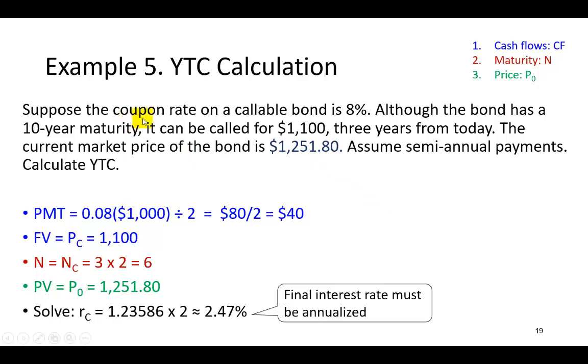It says here, suppose the coupon rate on a callable bond is 8%. Although the bond has a 10-year maturity, it can nevertheless be called for $1,100 three years from today. So let's pause here for a quick second. Remember that the face value of a bond upon maturity is $1,000.